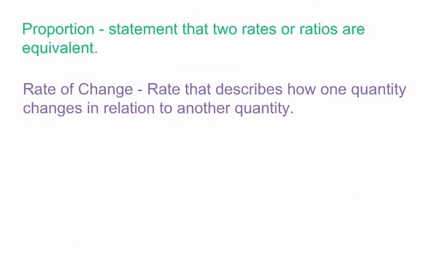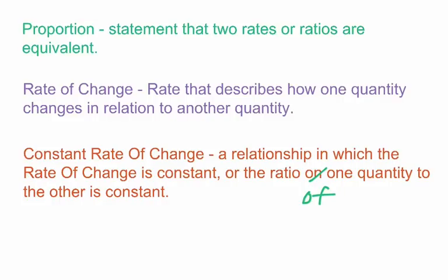Secondly, a rate of change. It's a rate that describes how one quantity changes in relation to another quantity. There's not always a rate of change, but sometimes there is. Sometimes you don't have a proportion that is equivalent, and then you have a rate of change, and so one quantity is changing in how it relates to another one. Finally, is there a constant rate of change? This is when a relationship in which the rate of change is constant, or it's consistent. It happens again and again, or the ratio of one quantity to the other is constant.